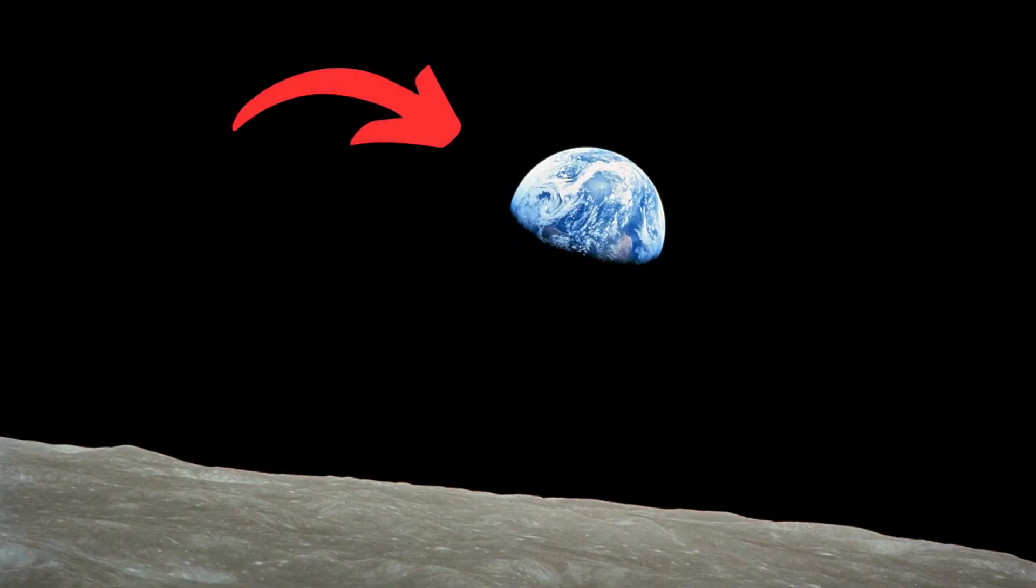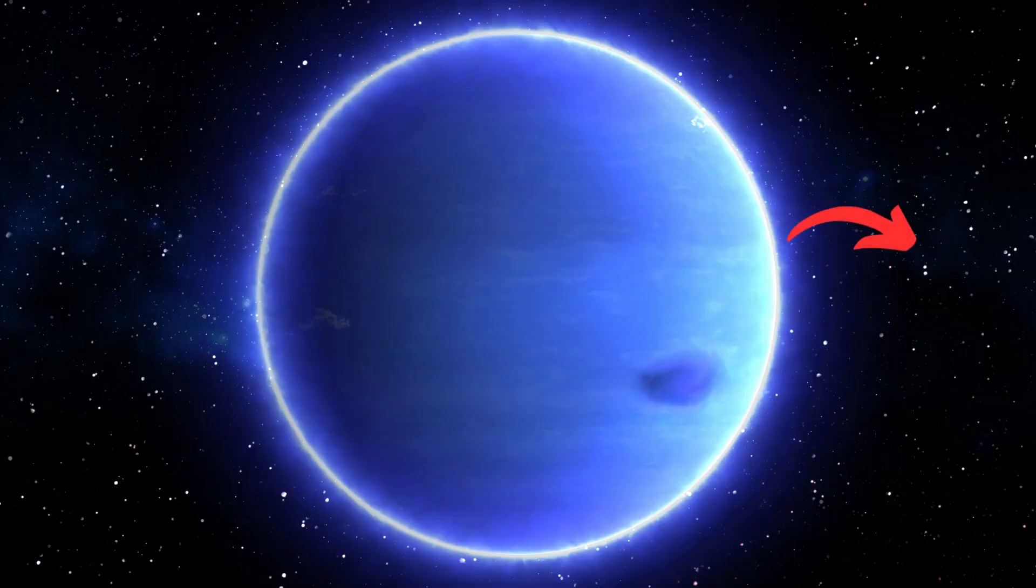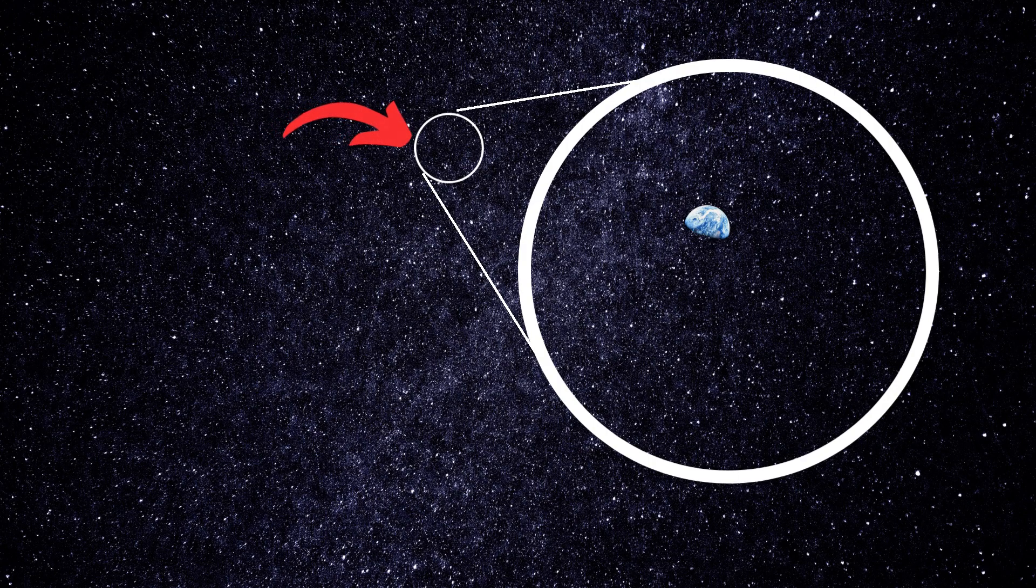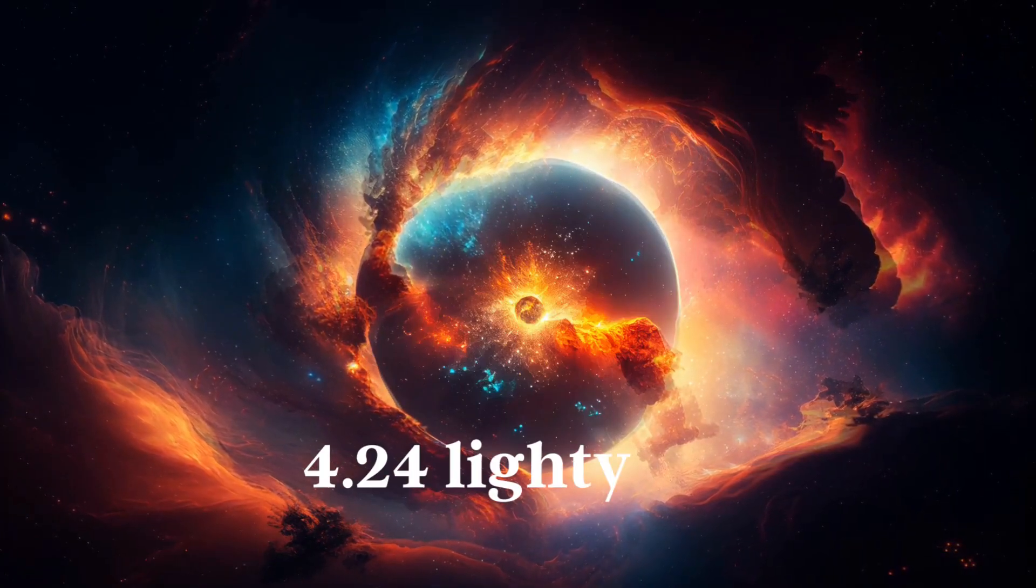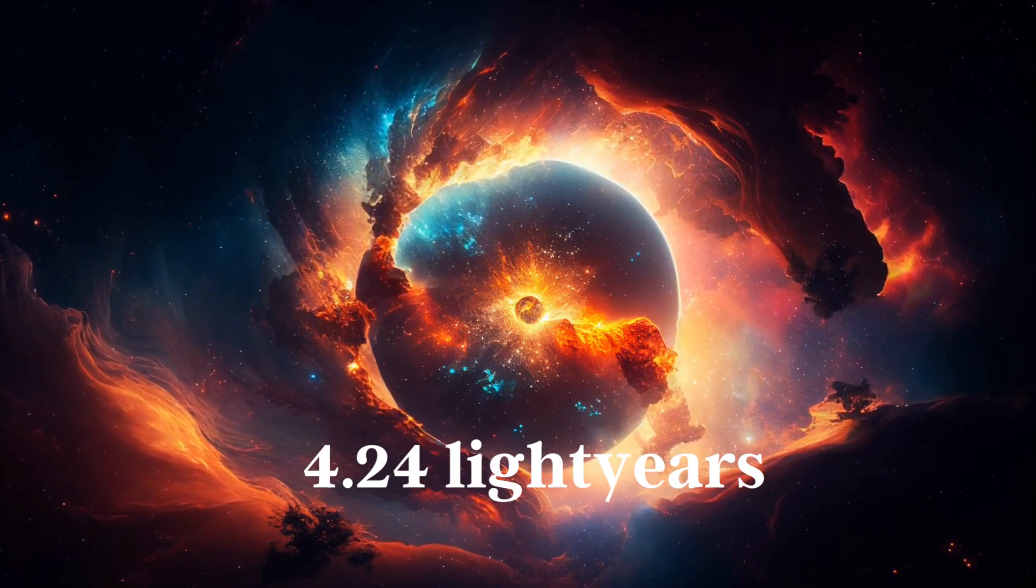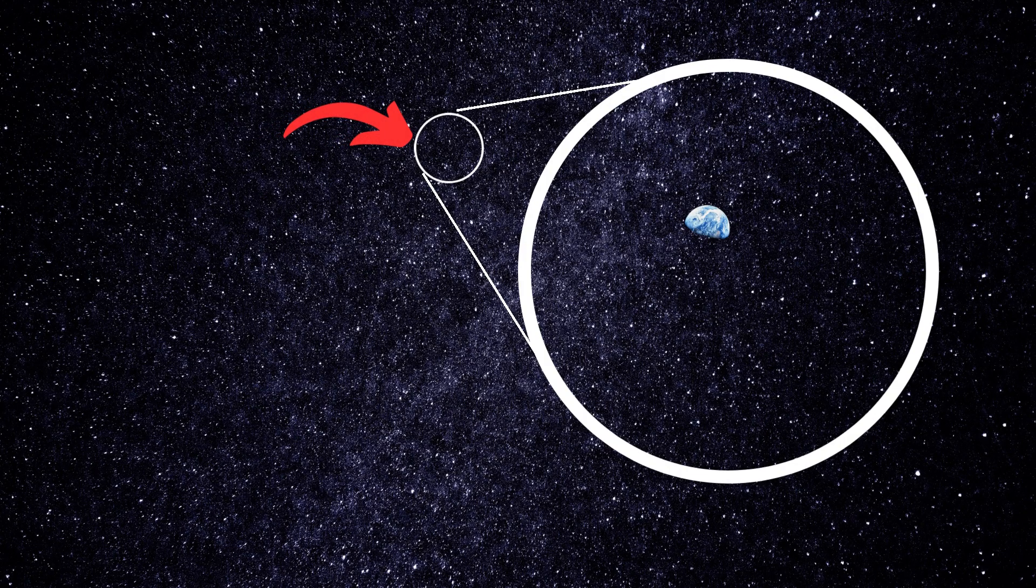So this is Earth from Mars and this is Earth from Neptune. Here's the same Earth from Proxima Centauri, the nearest star to our solar system, which is about 4.24 light-years away. It is not even visible from there.